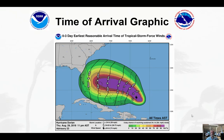This video will cover the time of arrival graphic and how it can be used in order to plan ahead of the storm. My name is Robert Boyeda and I'm the Warning Coordination Meteorologist with the National Weather Service in Miami.